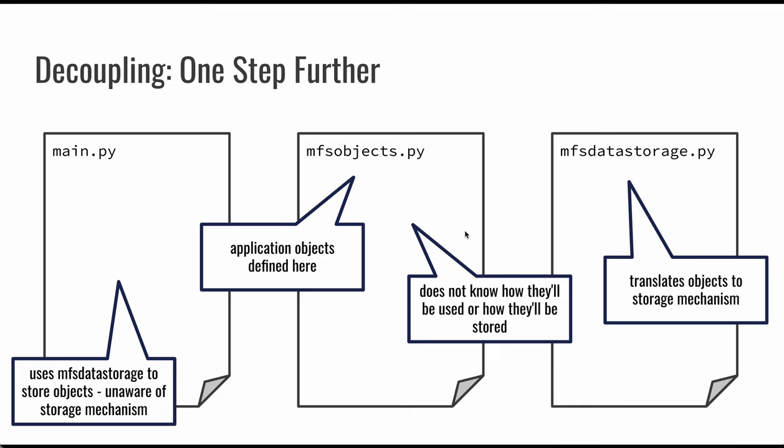Here you can see a little bit of an explanation. The main.py would then use the data storage file to retrieve the objects, but it doesn't actually have any idea what happens internally. The idea behind this is that later you could redefine MFS data_storage to go to the cloud data store, to a database, or to some other system. The objects in the middle are going to be defined, but they don't really have any context at all — they could be used for a website, an app, a command line application, or even a desktop visual application. They don't need to know how they're stored or how they're actually going to be used, so this separates each file and gives it a particular purpose.